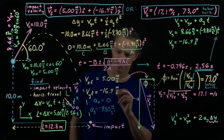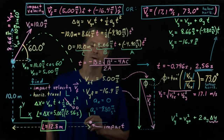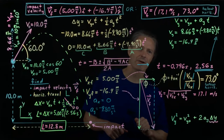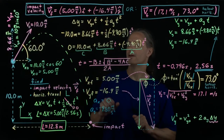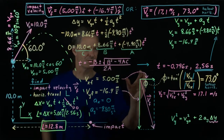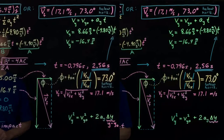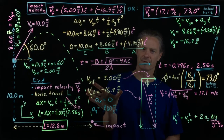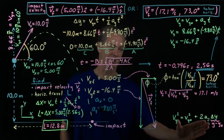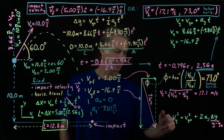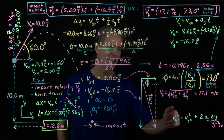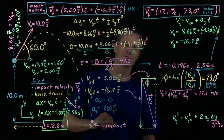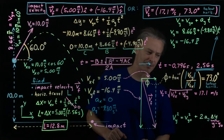Before finishing up, I want to do two more things. The first is to show a different way to find the y component of the impact velocity without first finding the time. Another way is to use the last of the kinematic equations, which does not contain time. We'll see this equation gives us a way to calculate the y component of the impact velocity directly.